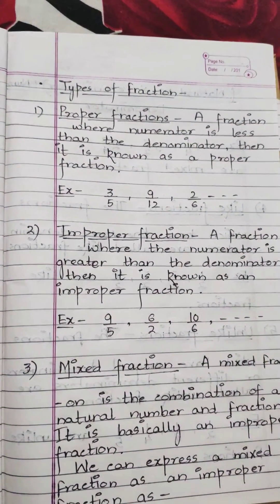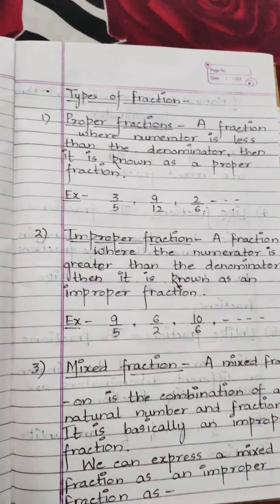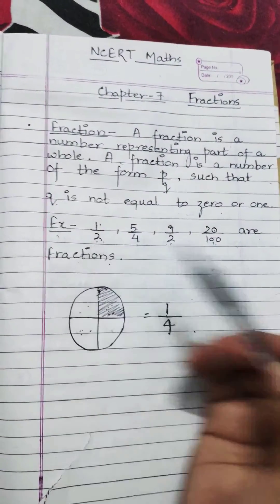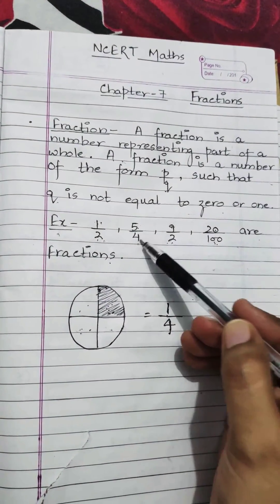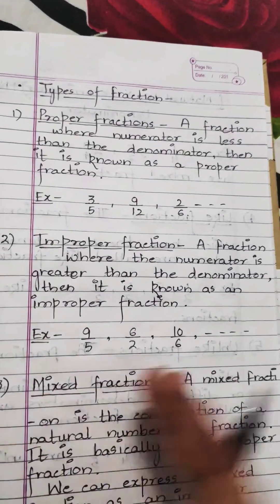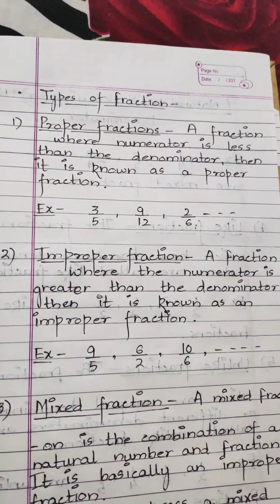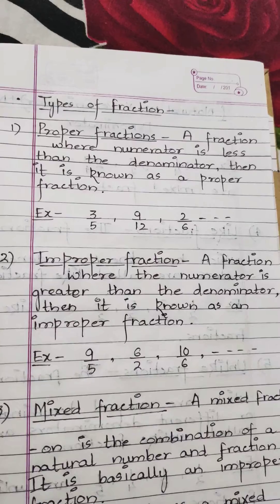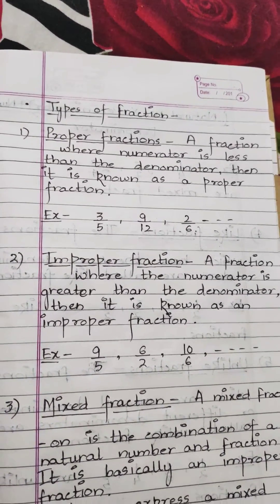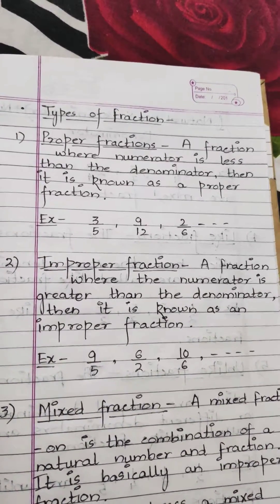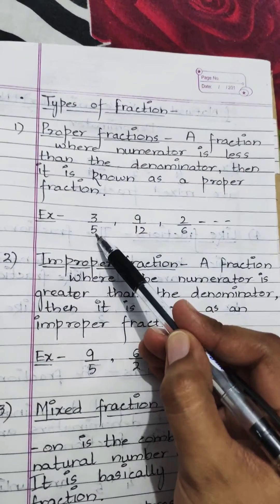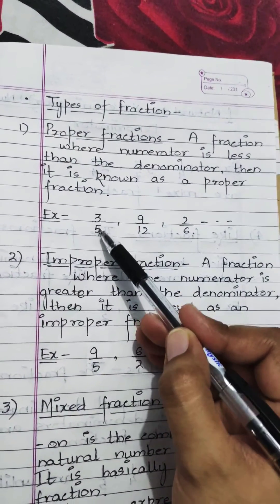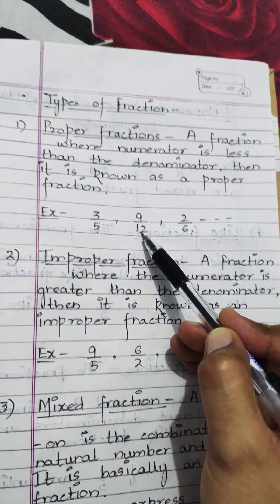When we talk about types of fractions, the first type is the proper fraction. In a proper fraction, the numerator is less than the denominator. Examples: 3 upon 5 — here 3 is the numerator and 5 is the denominator, so numerator is smaller than denominator. Similarly, 9 upon 12 and 2 upon 6 — in both, numerator is less than denominator.